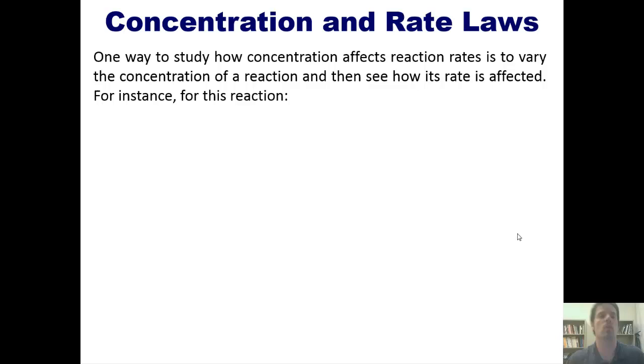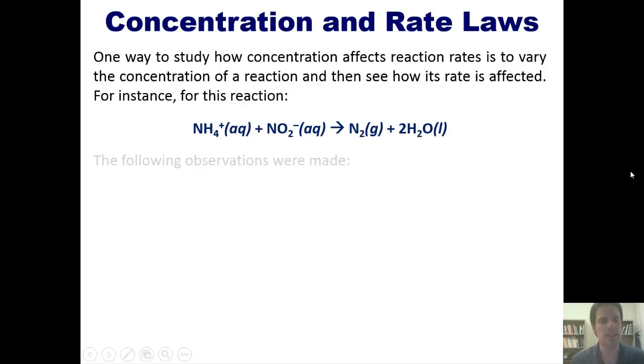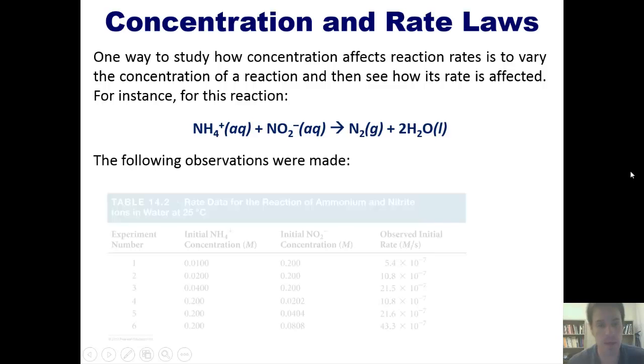In real life, one way to study how concentration actually affects the rate or speed of a reaction is to vary the concentration of a particular reaction and then measure how it affects the amount of time required to make that reaction go. For example, in this reaction, ammonium reacting with nitrate to form N2 gas in water, the following observations happen to have been made.